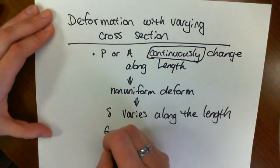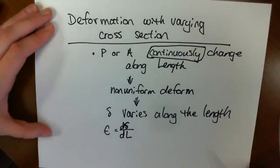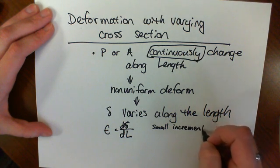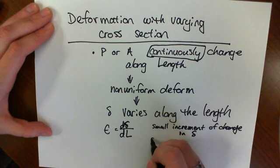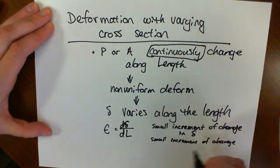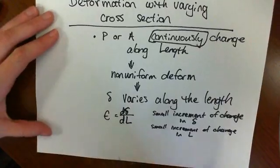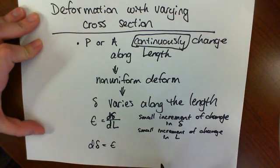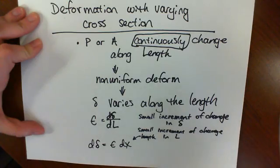So our strain is going to be equal to dδ/dL. If we take a small increment of change in our deformation and divide it by a small increment of change in our overall length, we'll get the strain. Solving for dδ, we get the strain times dx, where dx is our length if it's varying in the x direction.